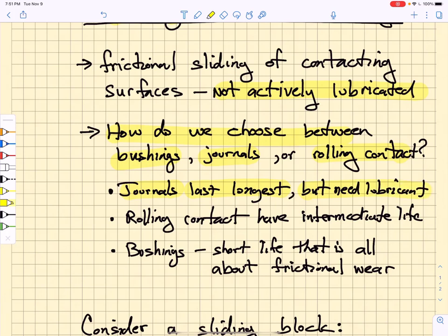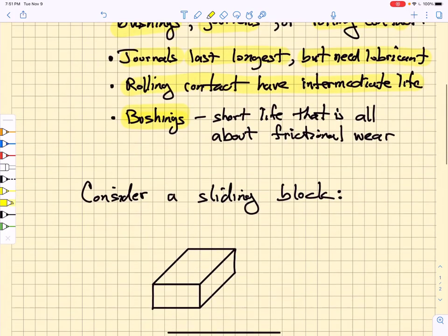Rolling contact bearings have intermediate life and are simpler to utilize. They also take up less axial space. Bushings have the shortest life because it is all about frictional wear.